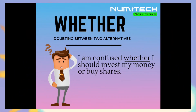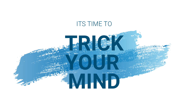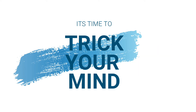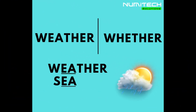'Whether' is used when we are choosing between two alternatives. So how can we remember which word refers to atmospheric conditions and which refers to choosing between two alternatives? There is a very simple trick to remember this.